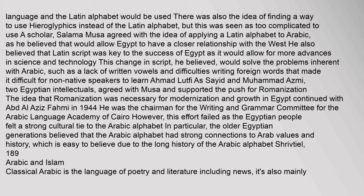After the period of colonialism in Egypt, Egyptians were looking for a way to reclaim and re-emphasize Egyptian culture. Some Egyptians pushed for an Egyptianization of the Arabic language, in which formal Arabic and colloquial Arabic would be combined into one language and the Latin alphabet would be used. A scholar, Salama Musa, agreed with the idea of applying a Latin alphabet to Arabic, believing that would allow Egypt to have a closer relationship with the West and allow for more advances in science and technology. However, this effort failed as the Egyptian people felt a strong cultural tie to the Arabic alphabet, with older generations believing it had strong connections to Arab values and history.